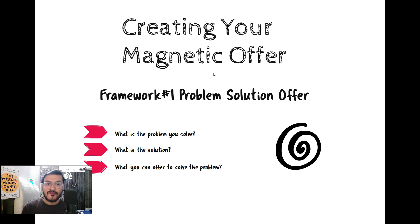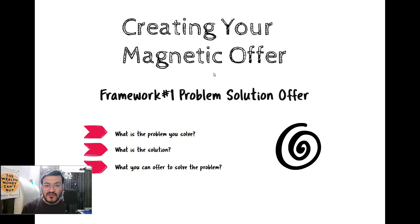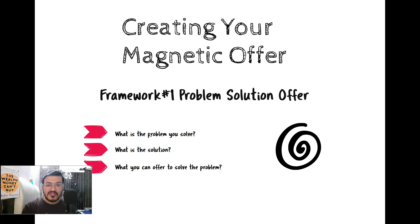Here you are focusing on solving the real problem for the target market. We are going to use the customer avatar that we created in the last video. So if you haven't watched the last video where I talked about creating your customer avatar, you can watch it by clicking the I button or checking out my channel. If you have created your customer avatar, you will have the list of problems your ideal customer is facing. The first step of this framework is to decide which specific problem you are going to pick and solve for the target market.